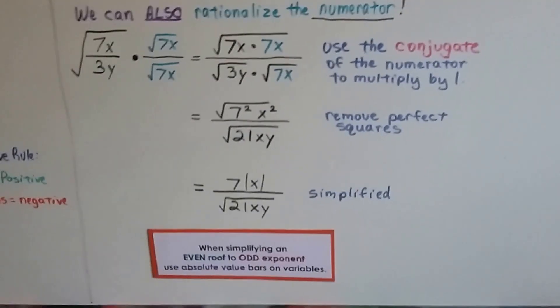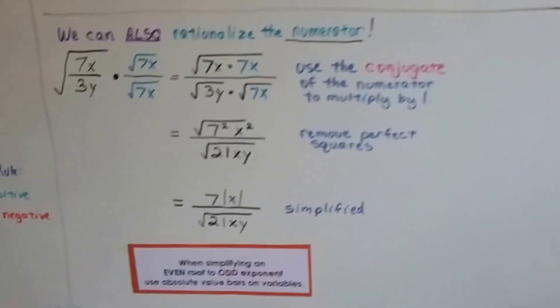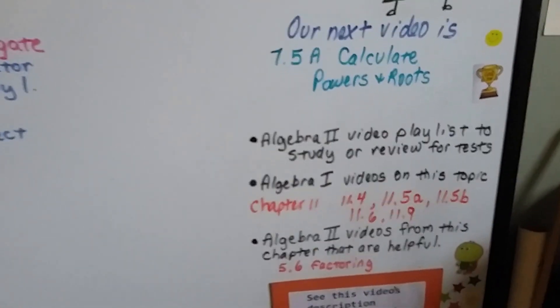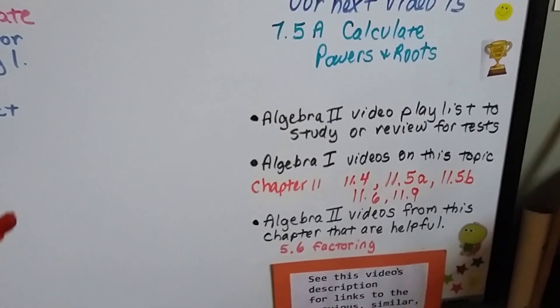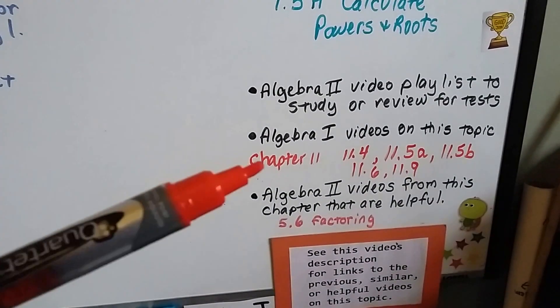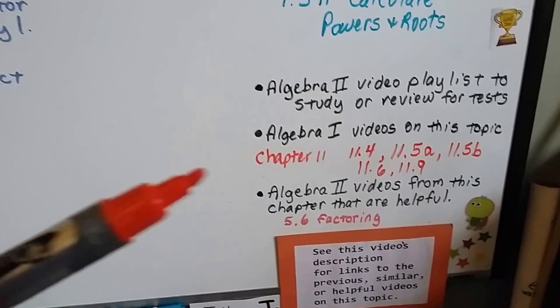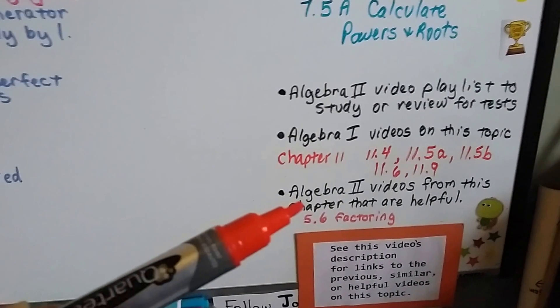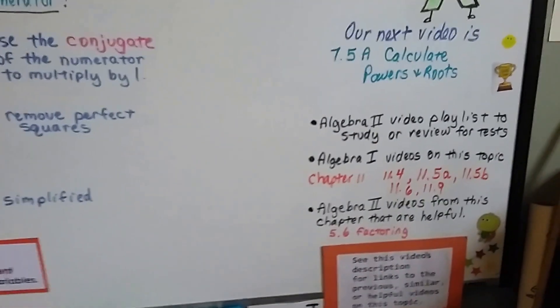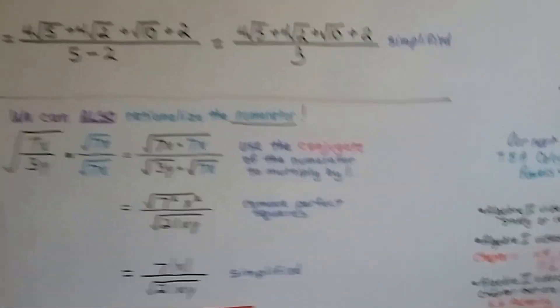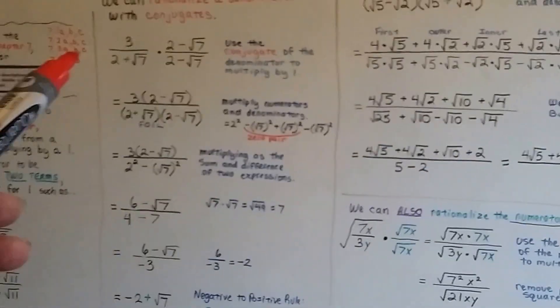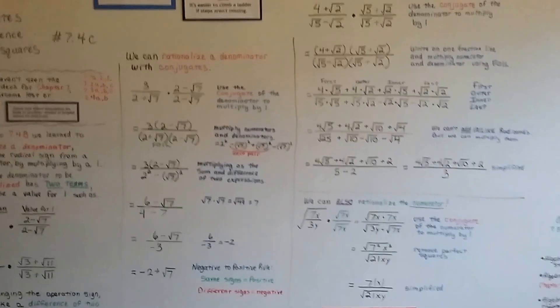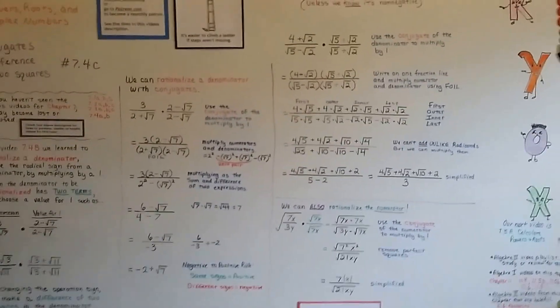Now our next video is going to be 7.5a. We're going to calculate powers and roots. And I'm going to add this video to the Algebra 2 playlist. I'm going to have the links to Algebra 1 from last year that we touched on some of this stuff, but I explained it maybe a little easier. And all the links for the current Algebra 2 videos from Chapter 7, these 11 videos that we just did, are all going to be at your fingertips. And you can just click on this description and watch the ones you're missing.